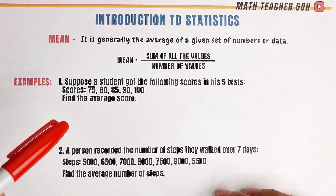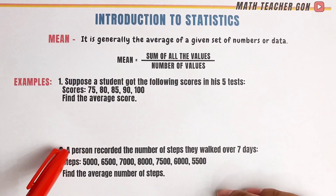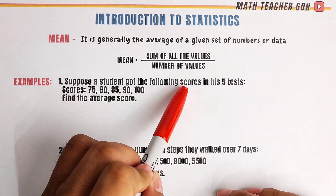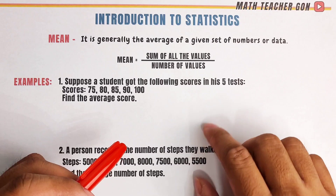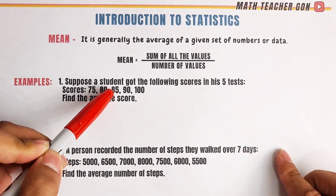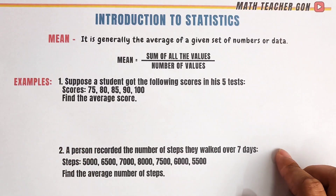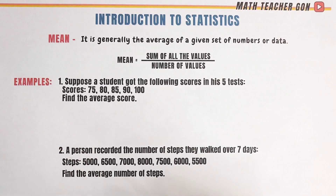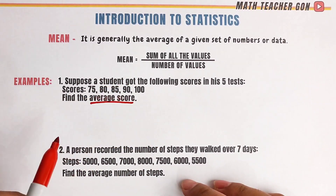So for you to understand how to use the mean formula, let us have this first example. Suppose a student got the following scores in his five tests, and the scores are 75, 80, 85, 90, and 100. We are asked to find the average score, which refers to the mean of these test scores.